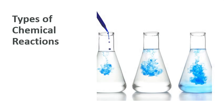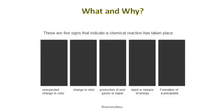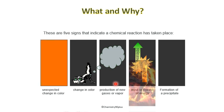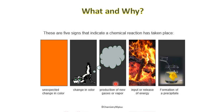In this video, we will discuss types of chemical reactions. These are the five signs that indicate a chemical reaction has taken place: an unexpected change in color, change in odor, production of new gas or vapor, an input or release of energy, and formation of a precipitate. We represent these chemical changes through a balanced chemical equation.